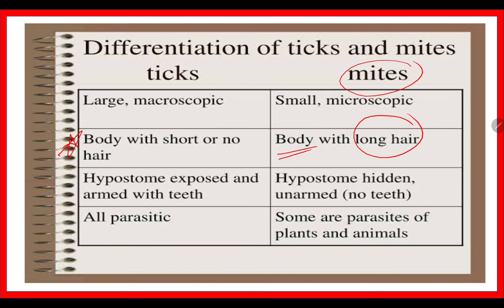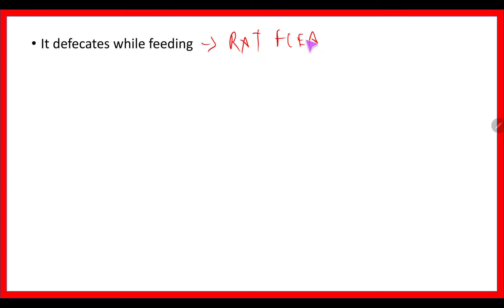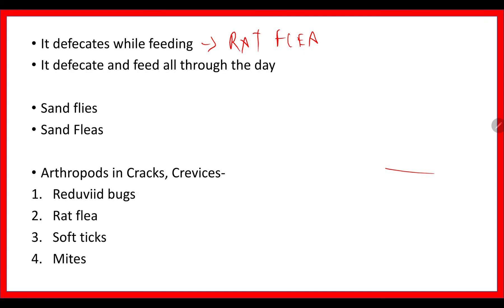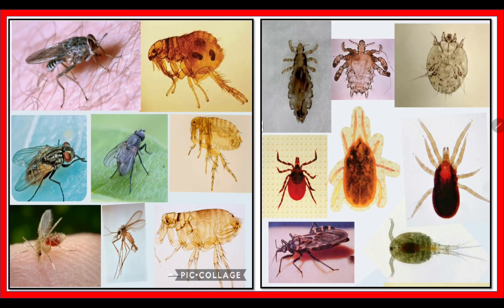Quick recap: Cyclops is pear-shaped with four tails and two pairs of antenna. Rat flea feeds and defecates while feeding. House fly eats, defecates, and feeds all through the day. A peculiarity between sand fly and sand flea is that only females bite. Arthropods that live in cracks — especially for people living in thatched houses — include the reduviid bug, rat flea, soft tick, and mite. In the next video, we will see how to differentiate all these arthropods at the site and also the management. Thank you for your patient listening.